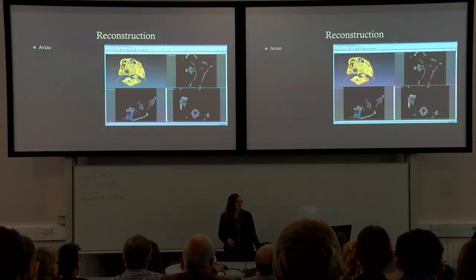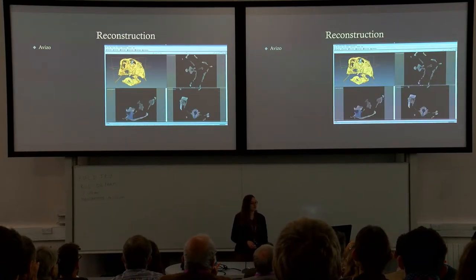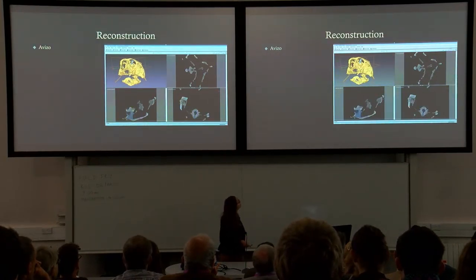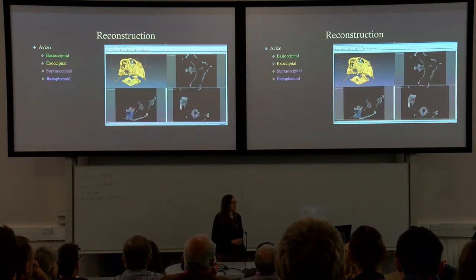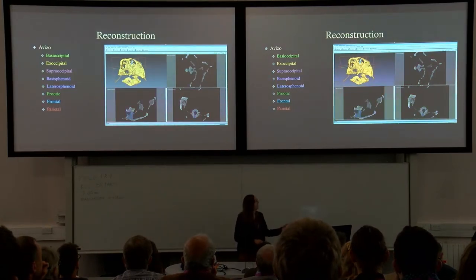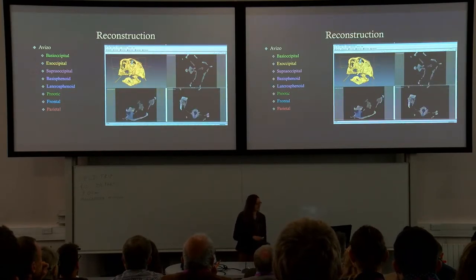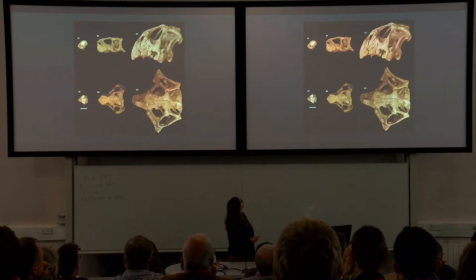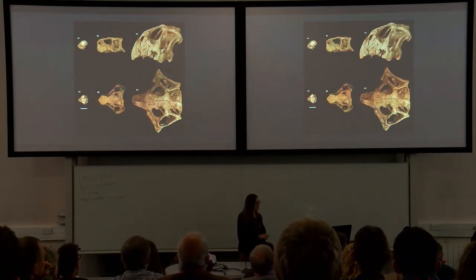Once I had my scans from Beijing, I brought them back to Bristol and segmented them in Avizo. I segmented the eight bones that surround the brain case, all color-coded to correspond with subsequent slides. These are three of the skulls I scanned: the tiny hatchling on the left, the juvenile in the middle, and the adult on the right. The scale bar is 20 millimeters, so the hatchling is very small.